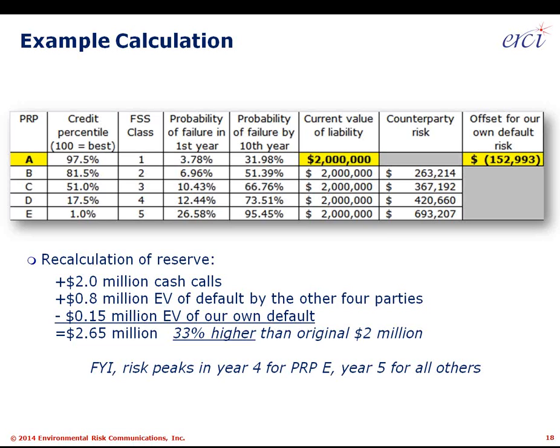Previously we would have displayed $2 million of cash calls and said that's what we know. With this tool, we step back and say: to comply with ASC 410-30, we should add $800K to the reserve to account for the impact of counterparty default, subtract out $150K to show the expected value of our own default, and arrive at a revised reserve of $2.65 million. That isn't necessarily good news for someone wanting to keep reserve balances down, but for a company wanting the most accurate reserve instead of the lowest possible number, $2.65 million is the right answer.